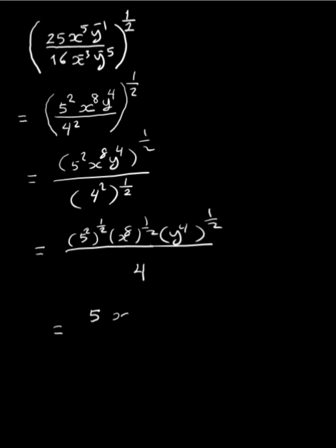8 to the power 8 to the power 1 half equals 8 to the power 8 times 1 half, which is 8 to the power 4. And y to the power 4 to the power 1 half equals y to the power 4 times 1 half, giving y squared. So the simplified answer is 5 times 8 to the power 4 times y squared over 4.